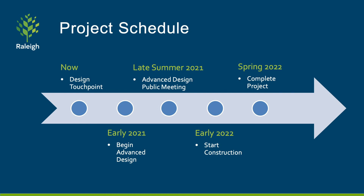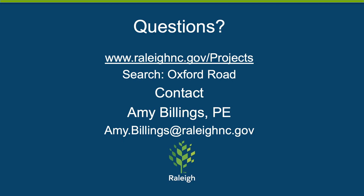Construction could begin tentatively in early 2022, with completion of the project later that spring. We greatly appreciate your time and patience as we keep the people of Raleigh informed on how the project is progressing. Please review the design public meeting map on the project website at RaleighNC.gov/projects and use the search term Oxford Road. There is also a link on this page to take an online survey to let us know what you think about the proposed design. We are collecting public feedback through June 7th. We hope you have a great day and thank you for your interest in the Oxford Road project.